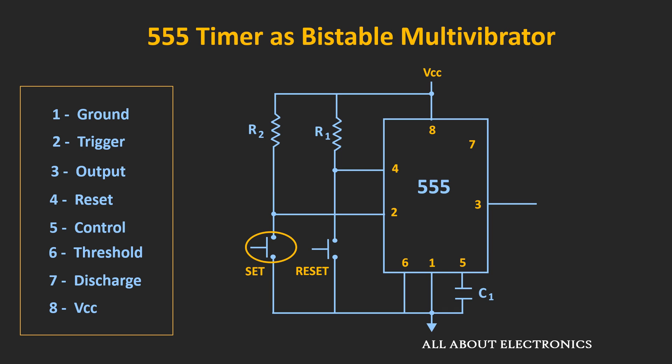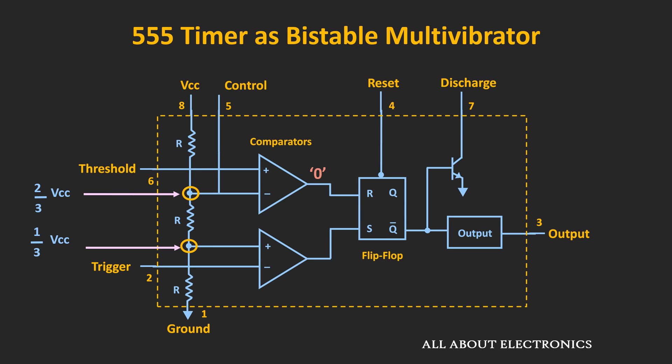Once the switch is released, the voltage at pin number 2 will once again be equal to the supply voltage. So in that condition, the output of the second comparator will become logic zero, meaning R and S are both equal to zero, and the flip-flop will retain its previous state. So in this case, Q will be equal to 1, and hence the output of the 555 timer will also remain at logic high.